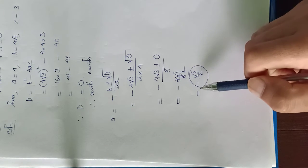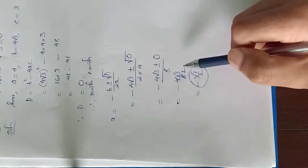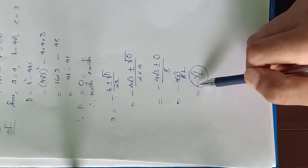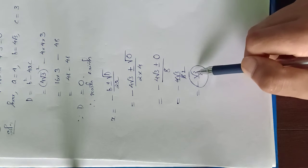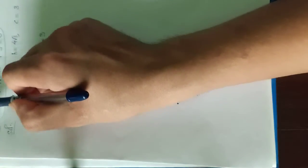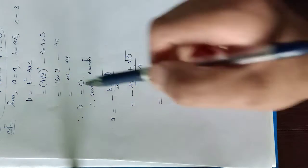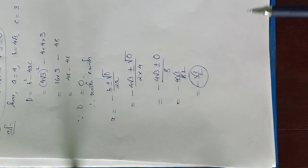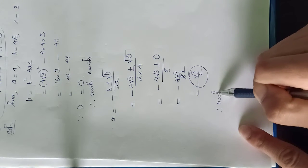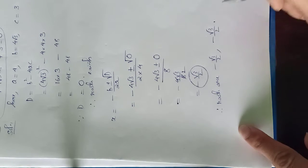In continuation to the previous video, the value of x is determined to be minus square root of 3 by 2. Now, a quadratic equation must have two roots. In this case, both the roots will be equal and each of them is minus square root of 3 by 2. Therefore, the roots are minus square root of 3 by 2, minus square root of 3 by 2.